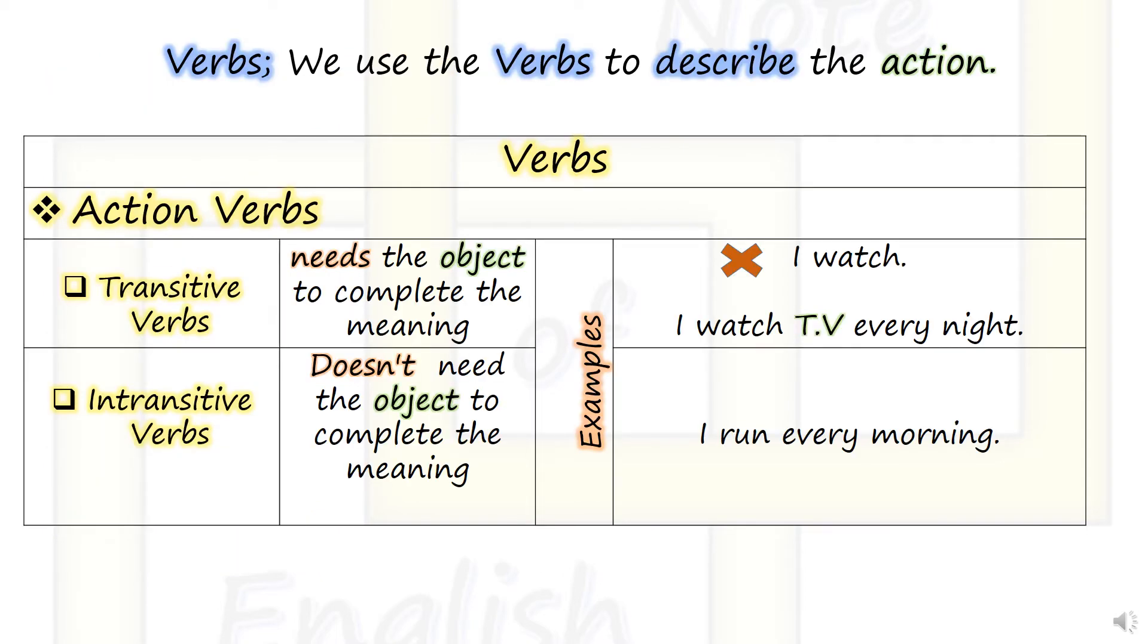Verbs. We use verbs to describe the action. Action verbs include transitive verbs, which need the object to complete the meaning. Example: 'I watch' is incomplete. 'I watch TV every night' is complete because watch needs TV.